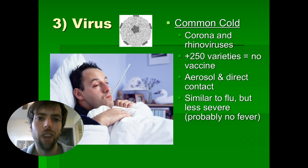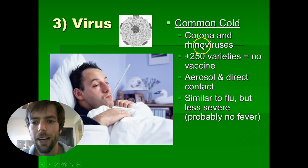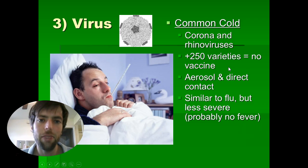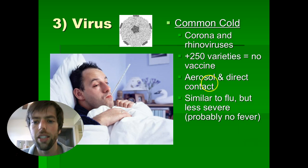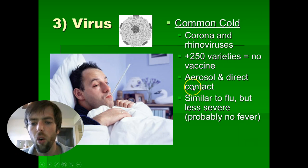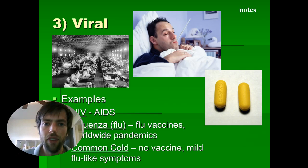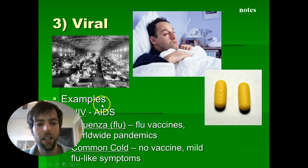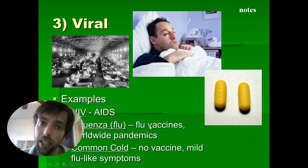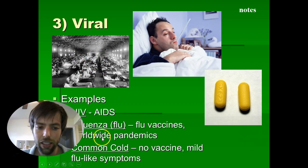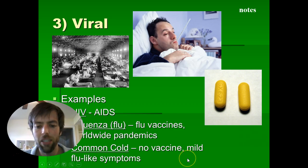A lighter-weight viral infection is the common cold. There are over 250 varieties, so just like the flu, there are tons of types. Similar to flu, it spreads through coughing in the air or by touching contaminated surfaces, with similar but less severe symptoms — you just feel lousy for a couple of days. We don't make vaccines for the common cold because it changes so often; we just have to gut it out, and it tends to be milder.